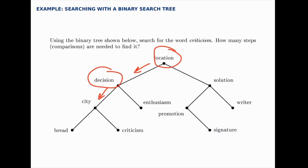And criticism comes after city, so we'll move to the right. So our third comparison brings us at last to the word. In three steps, we've located this word by searching through this binary search tree.